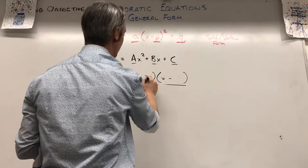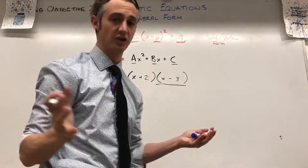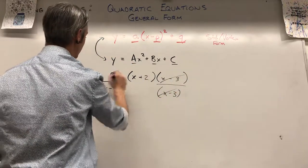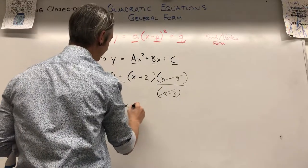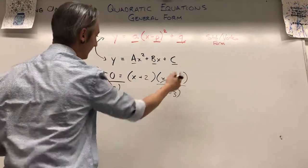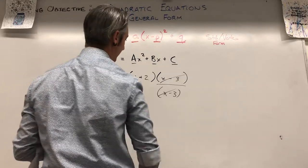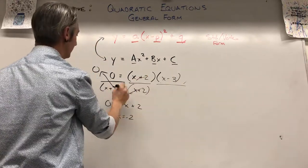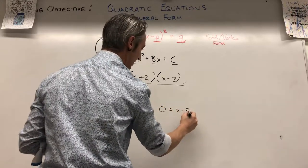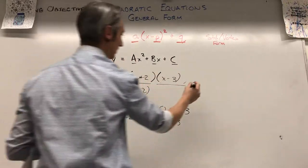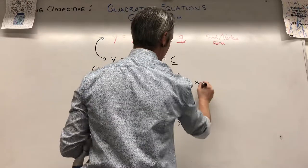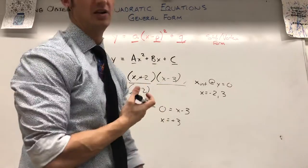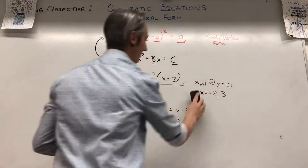For example, say I found the factors (x + 2)(x - 3) from a general form. If I divide out (x - 3), I get x + 2 = 0, so x = -2. And if I divide out (x + 2), I get x - 3 = 0, so x = 3. So these factors tell us directly that our x-intercepts — where y = 0 — are x = -2 and x = 3, basically just the opposite signs of the numbers in the factors.